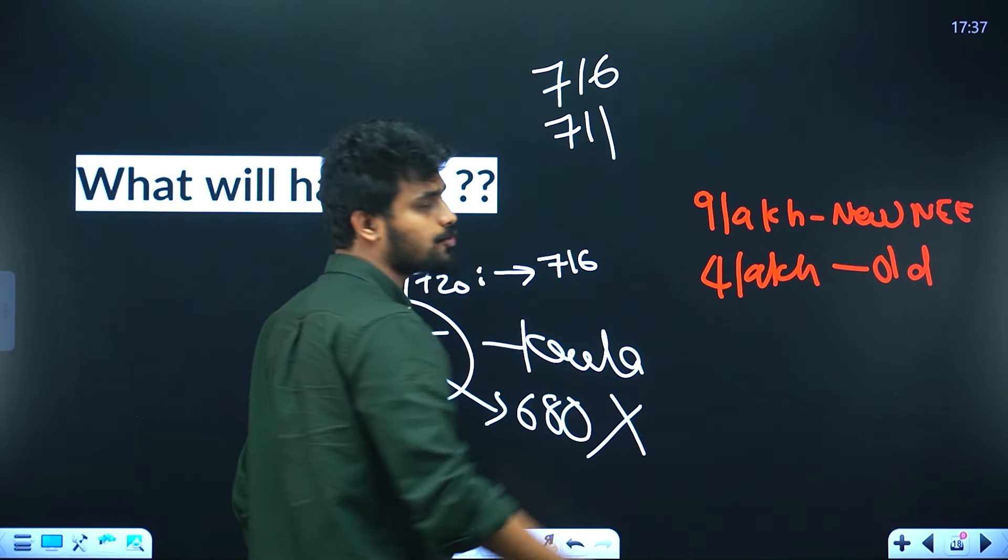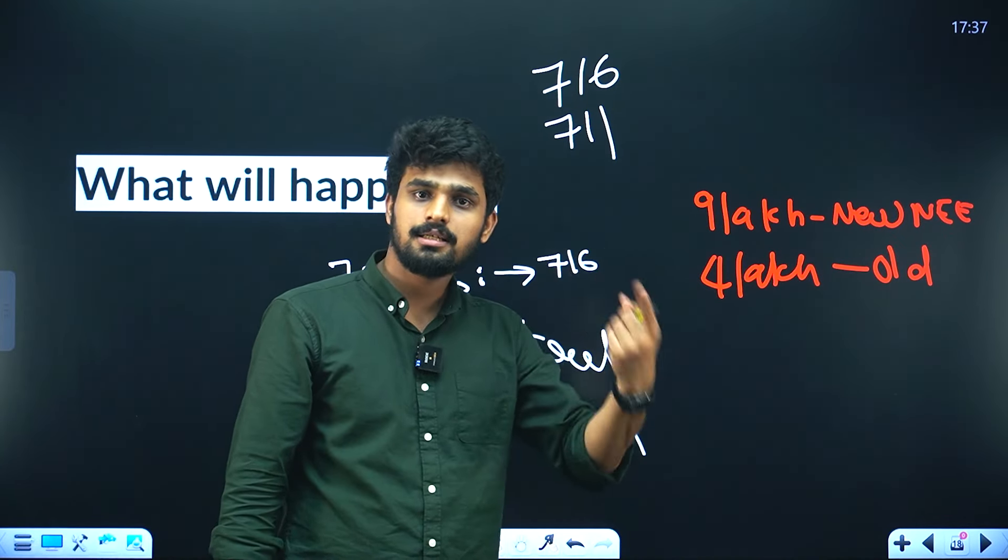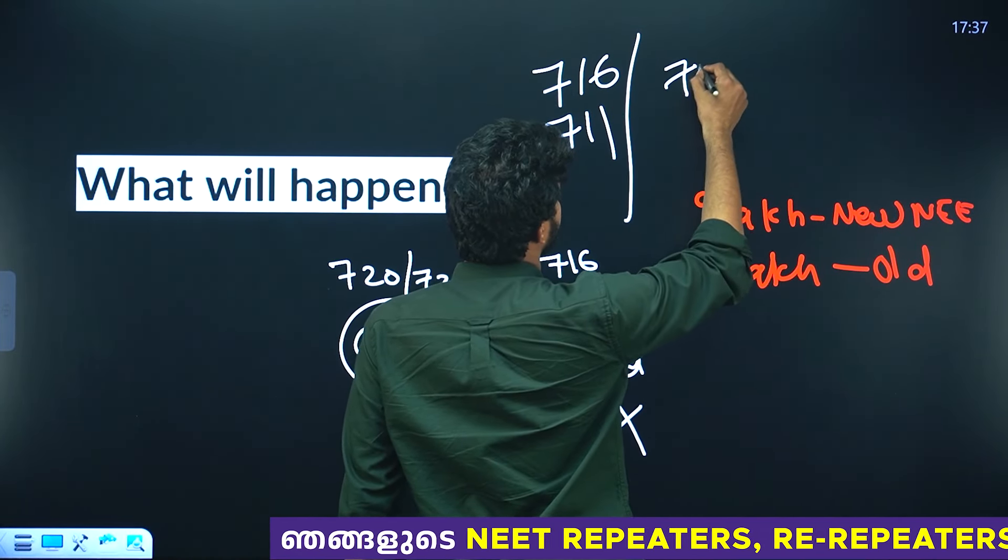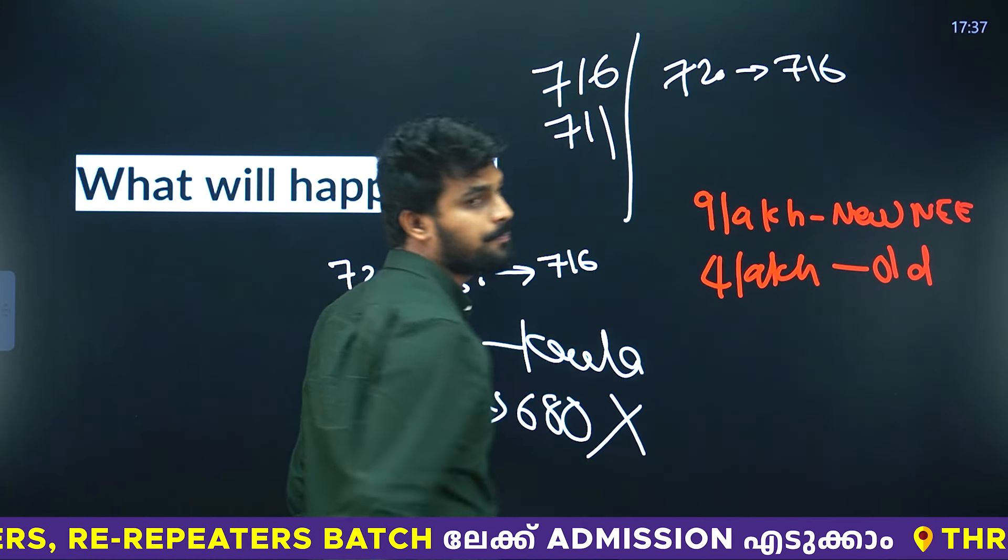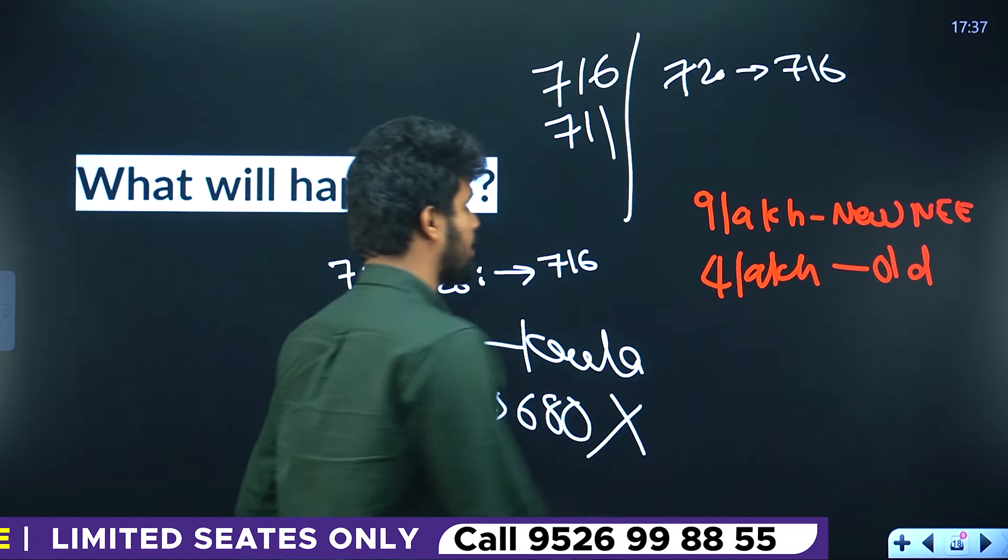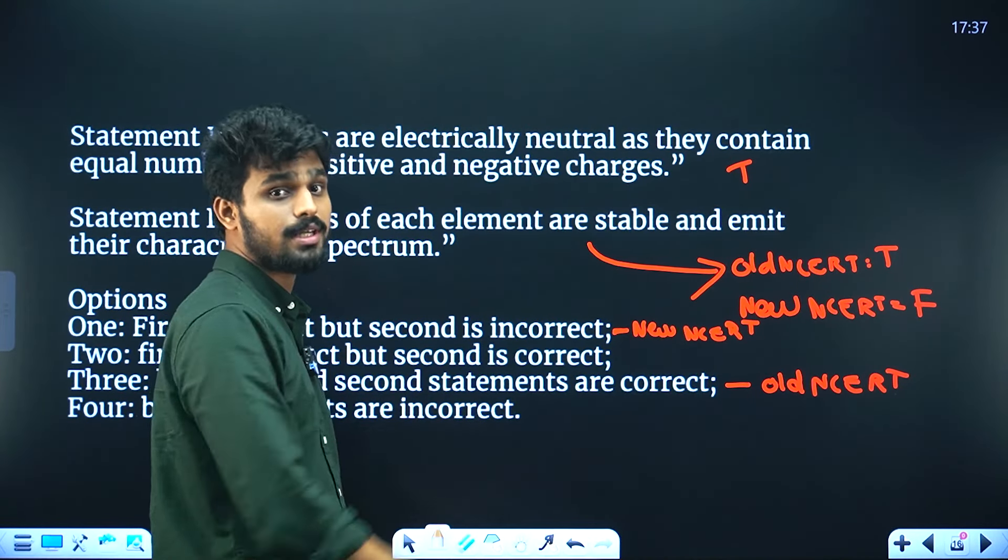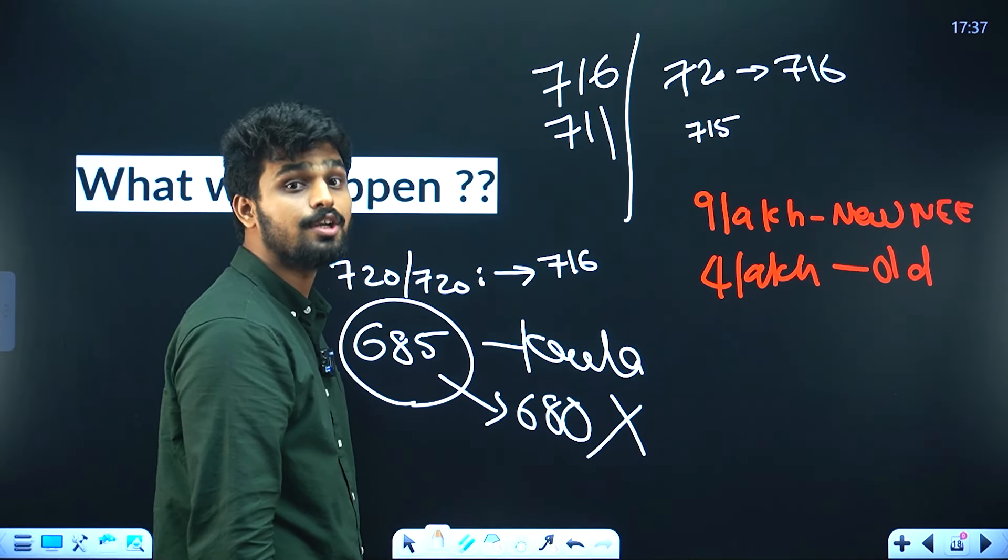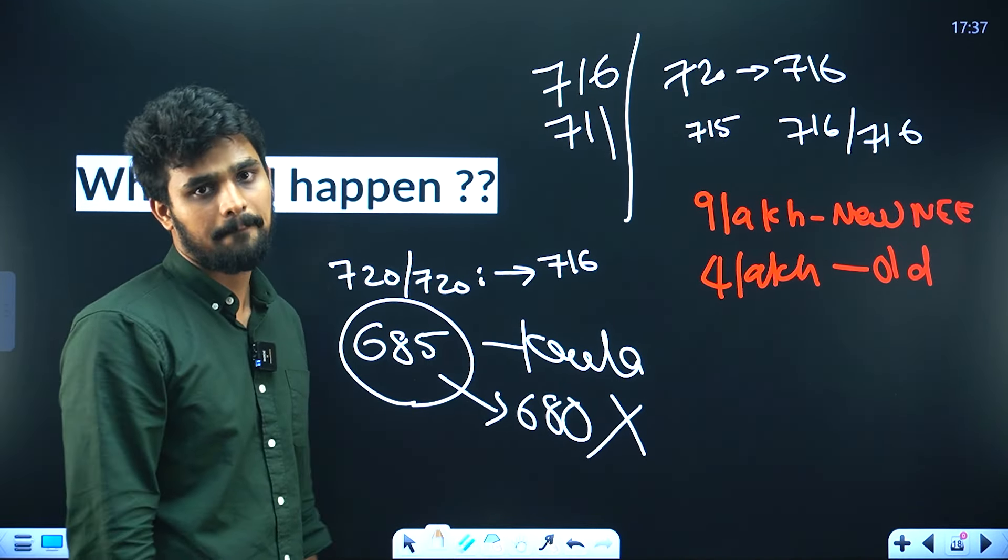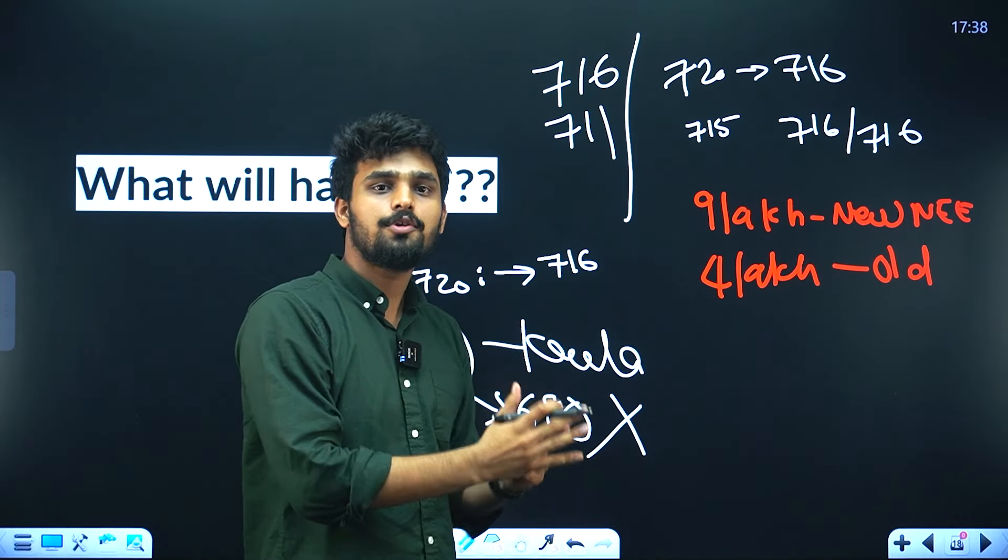Another possibility is to cancel the question. Maximum attainable mark is 716. If you cancel this question, one person who has 715 would not lose anything. But if you cancel, you need to ensure fair advantage for everyone. What will be the benefit? That's why everyone is concerned.